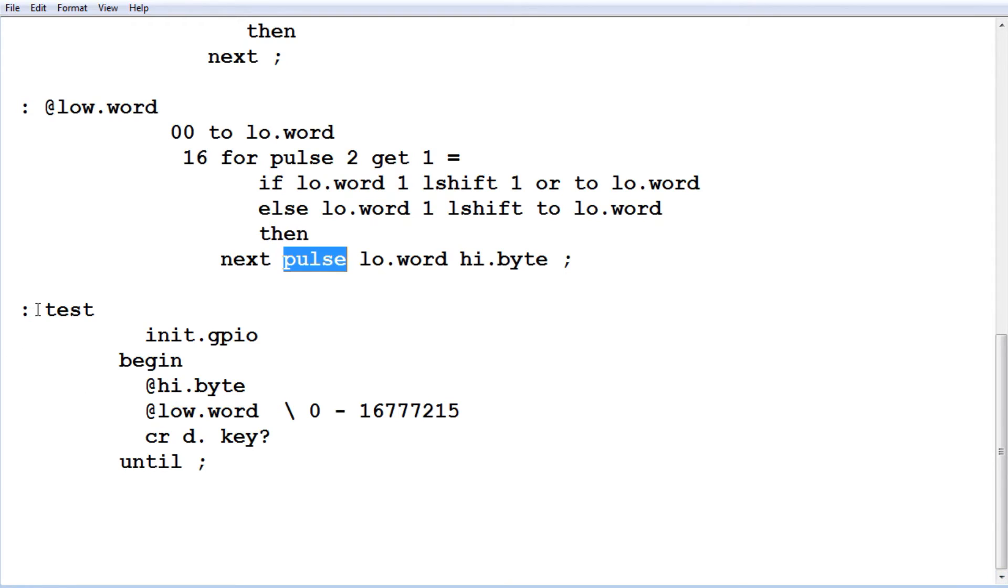Now I have a word called test. This is running continuously and it's running read high byte, read low word, and it's going to print out the 24-bit data word. That 24-bit data word will be between 0 and 16,777,215. So that's an unsigned data length for 24 bits.